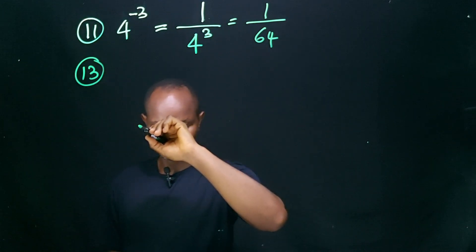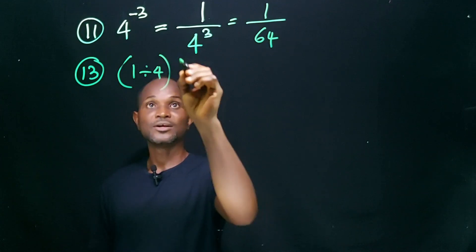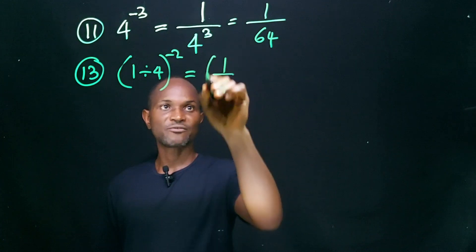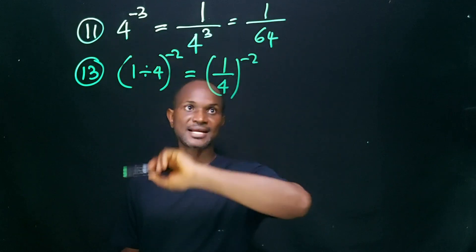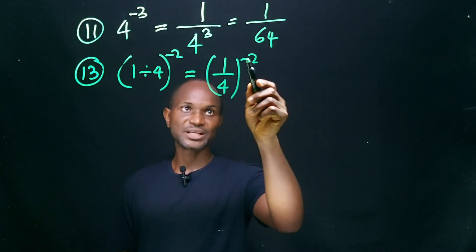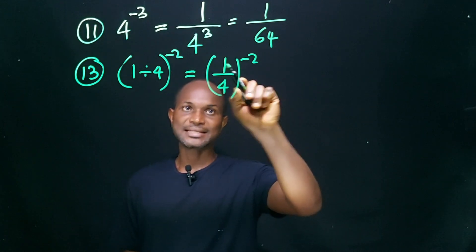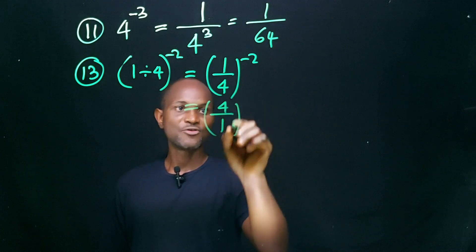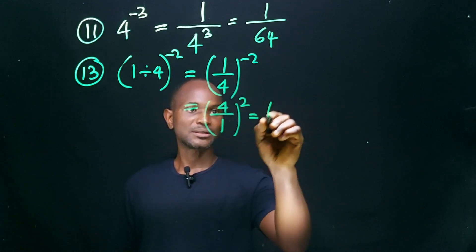Number 13: (1/4) raised to power minus 2. Here we have a fraction with a negative index. When we have a fraction and a negative index, what the negative index does is flip the fraction upside down. So instead of 1 over 4, we have 4 over 1, raised to power 2. This is simply 4 times 4, which is 16.